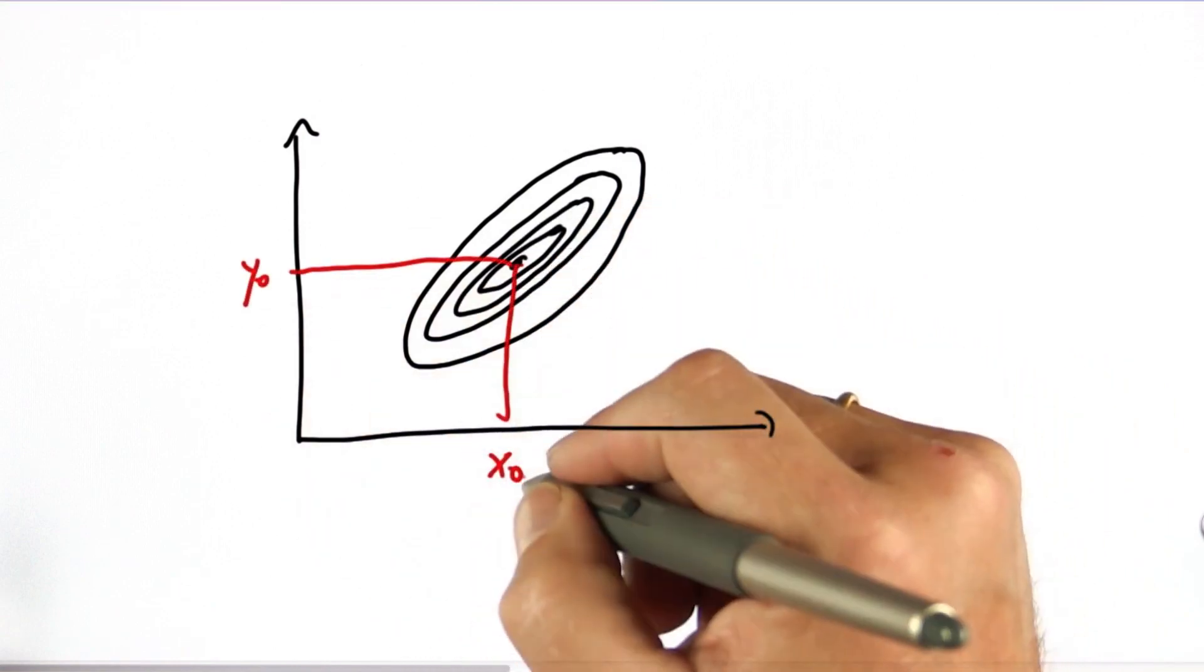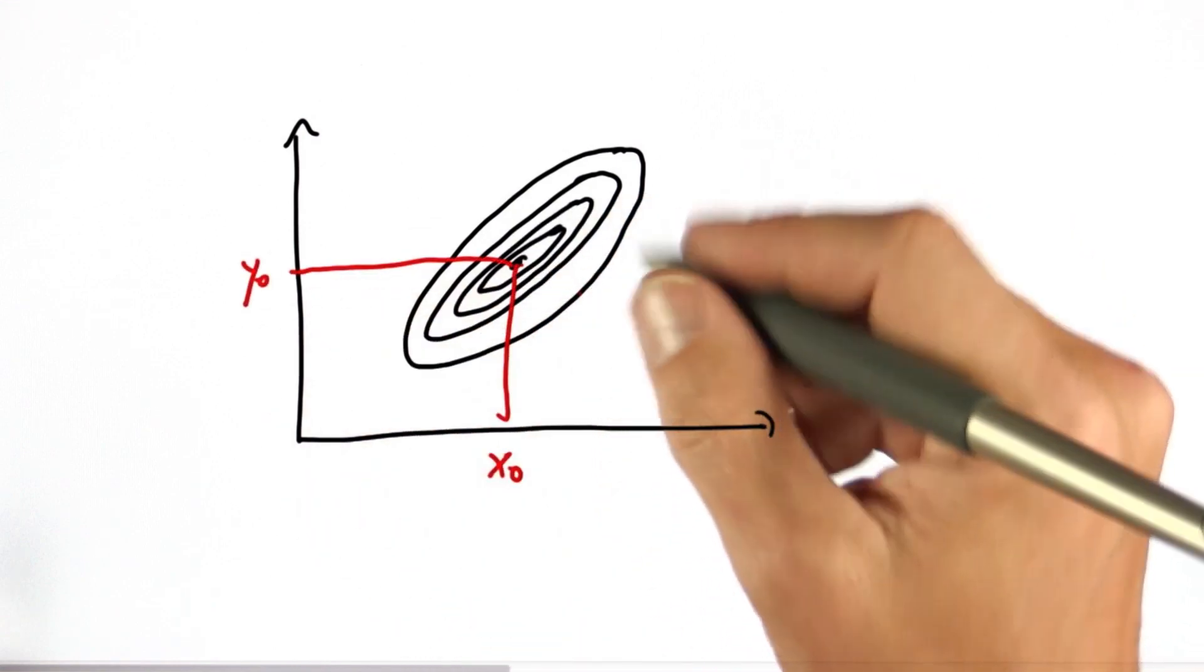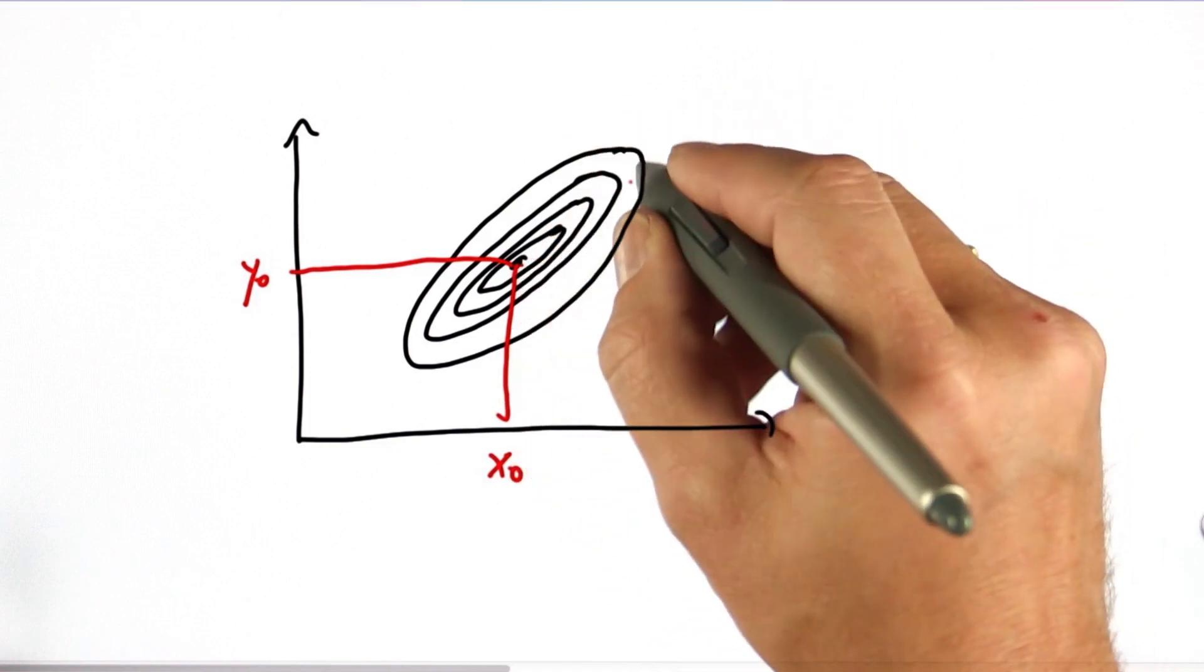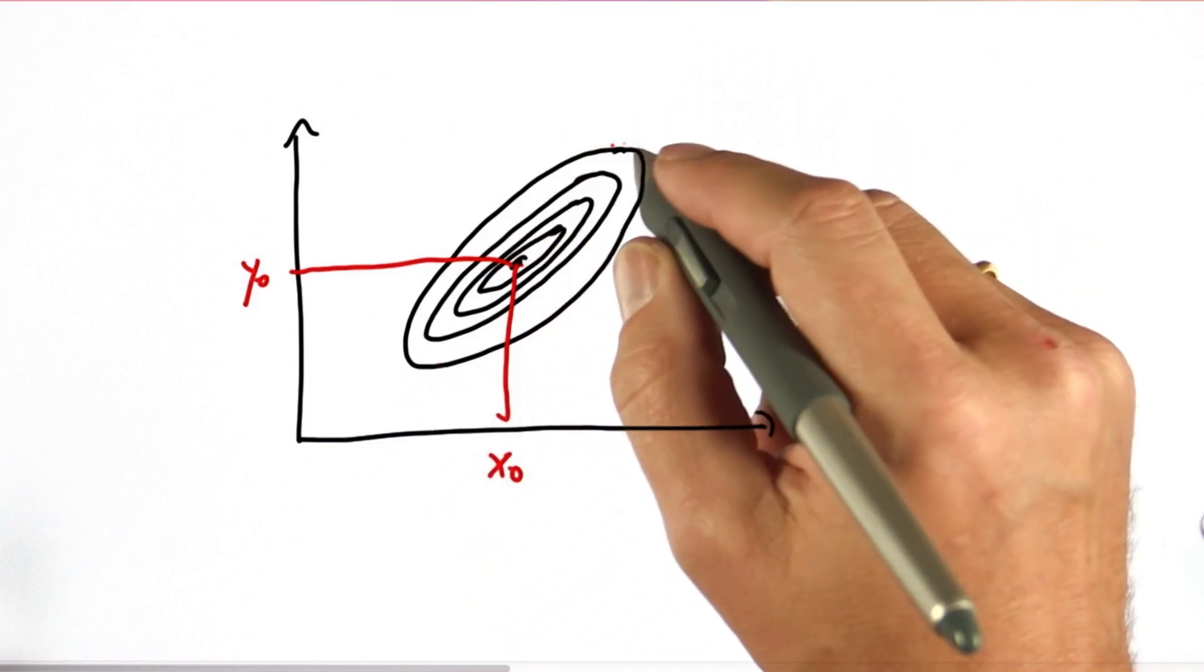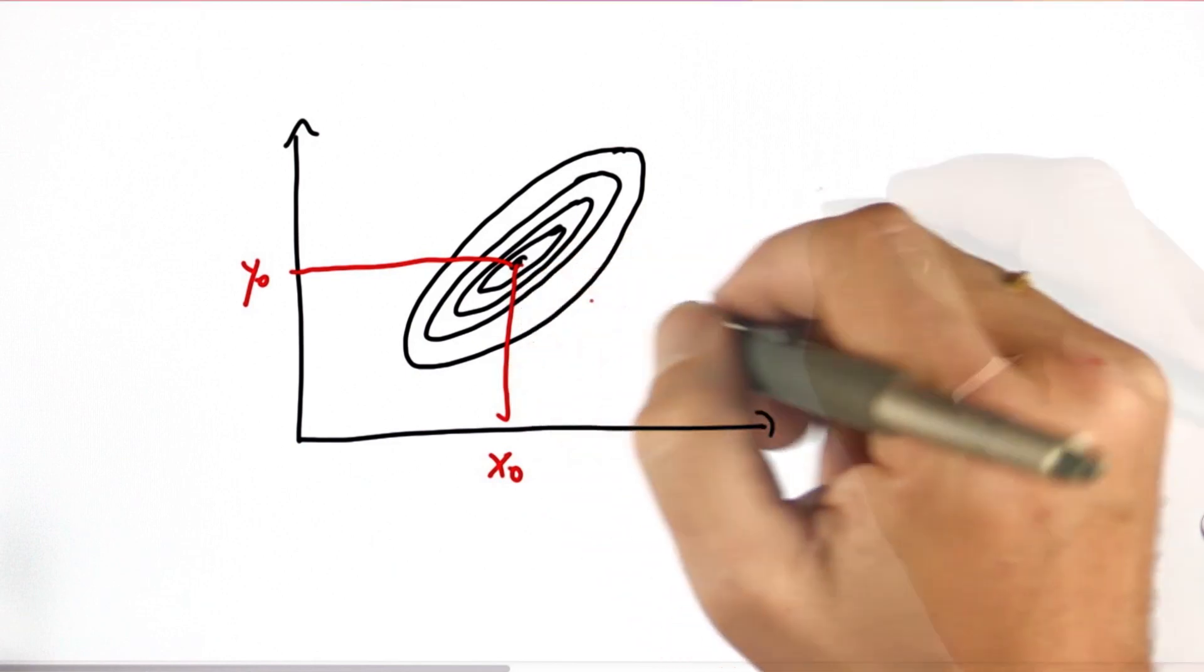The mean of this Gaussian is this x0, y0 pair, and the covariance now defines the spread of the Gaussian as indicated by these contour lines.